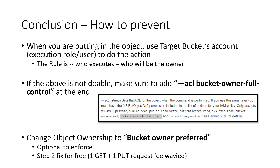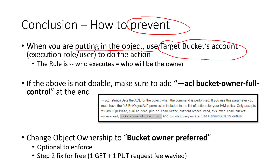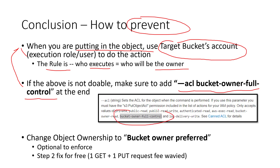In the last part of the conclusion, I'm going to tell you how to prevent this from happening and what the best practice is. When you are putting and writing an object into the bucket, you should be using the target bucket's account — either that is the execution role or the access key owner to do this action. Because in AWS, the general rule is: whichever account is executing the command, that account will be the owner. If the above rule is not doable, make sure in your boto3 or CLI command, add ACL bucket-owner-full-control at the end. This example is shown in the CLI documentation.